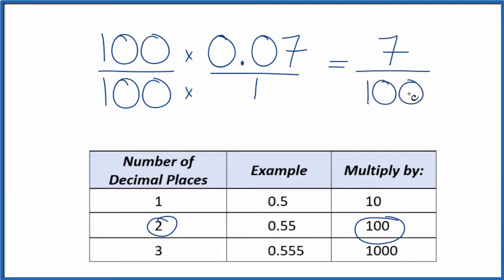And we end up with a fraction, 7 over 100. We can't reduce this any further. So when we change 0.07 from the decimal to the fraction, we end up with 7 over 100. This is Dr. B, and thanks for watching.